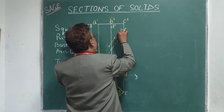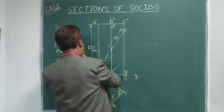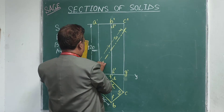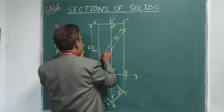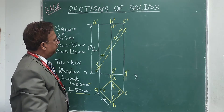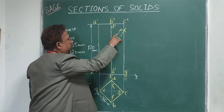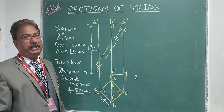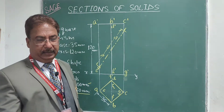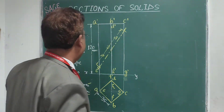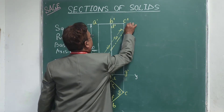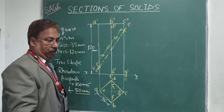By cutting 50mm on both sides of the square prism, I get the length of the AIP equal to 100mm. You can also denote this AIP as VT — this is the VT of the section plane.